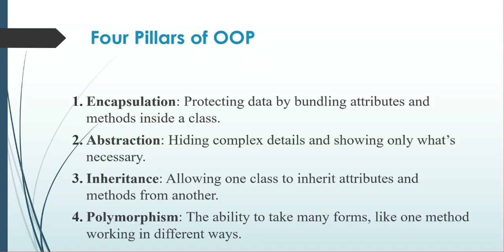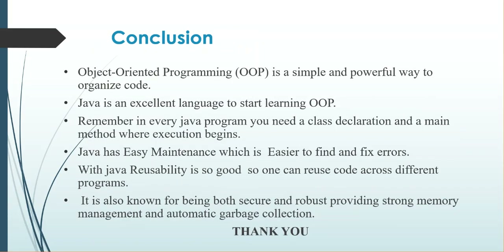Java and object-oriented programming has four pillars: encapsulation, abstraction, inheritance, and polymorphism. Encapsulation is protecting data by bundling attributes and methods inside a class. Abstraction is hiding complex details and showing only what is necessary. Inheritance is allowing one class to inherit attributes and methods from another. Polymorphism is the ability to take many forms, like a method working in different ways.